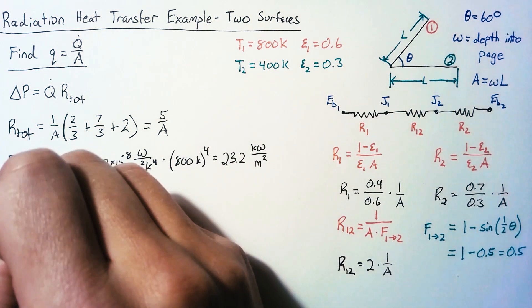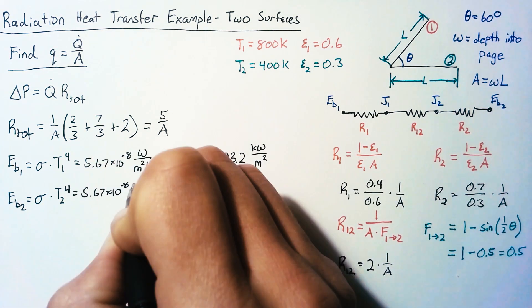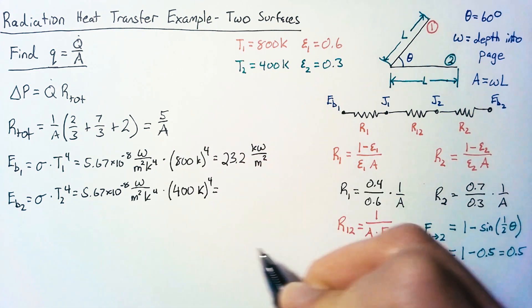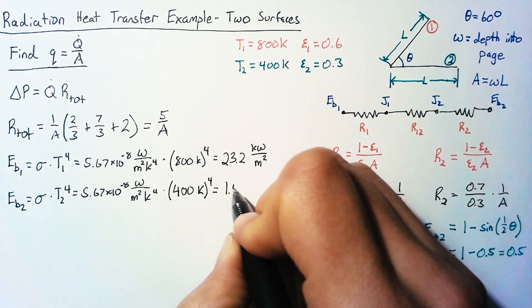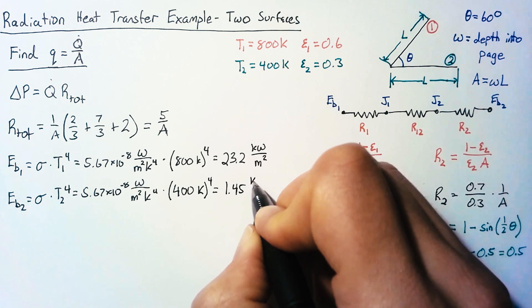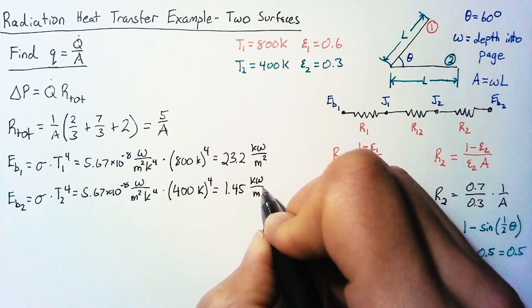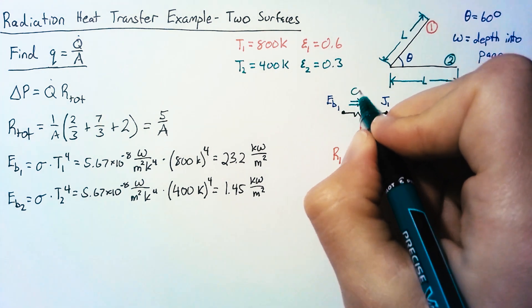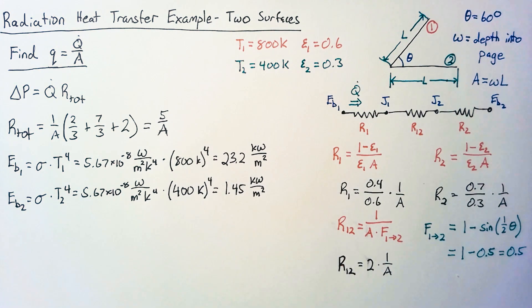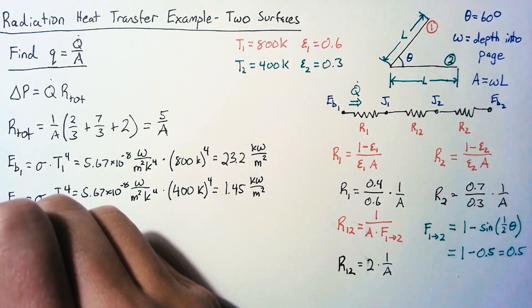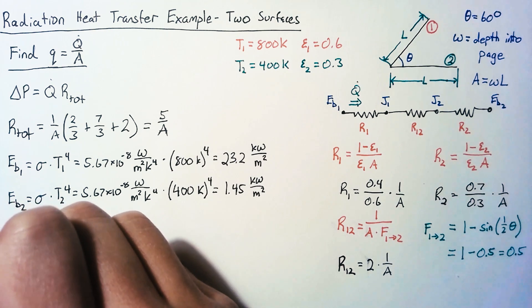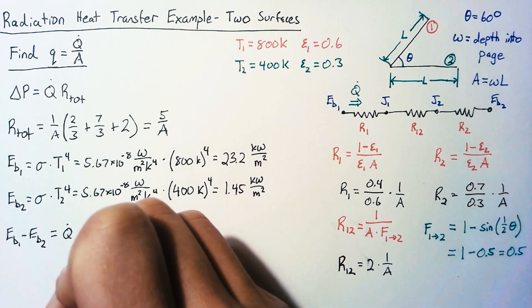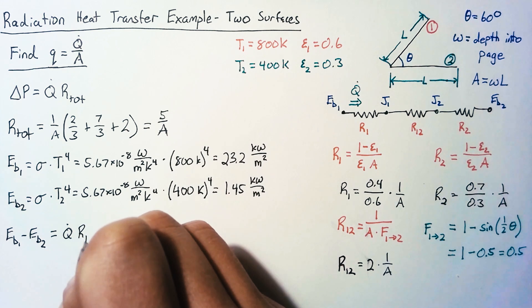EB2 will do much the same way. And that'll end up as 1.45 kilowatts per meter squared. So defining our Q dot as moving from left to right, we can say that our delta P is equal to EB1 minus EB2. And that'll be equal to Q dot multiplied by our total resistance.